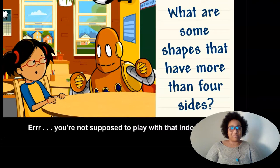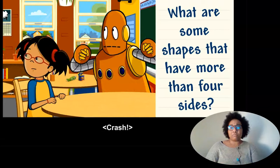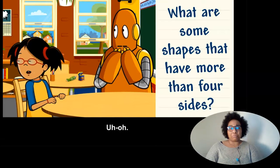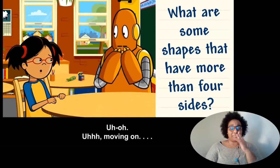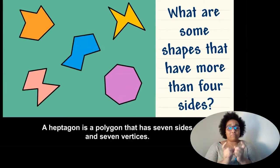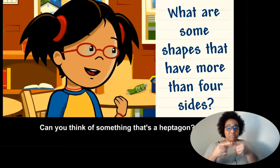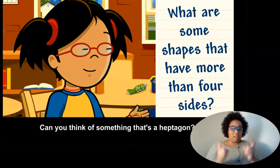You're not supposed to play with that indoors. Uh-oh. Moving on, a heptagon is a polygon that has seven sides and seven vertices. Can you think of something that's a heptagon?